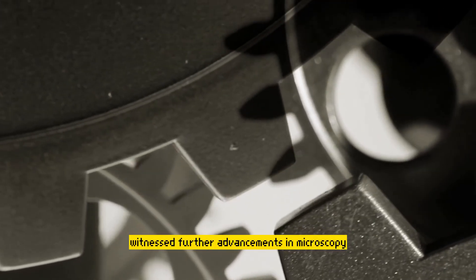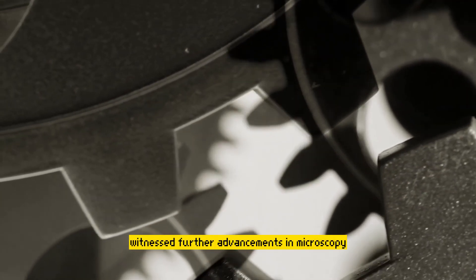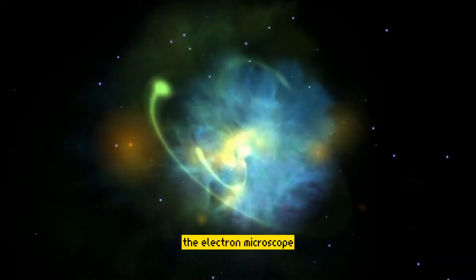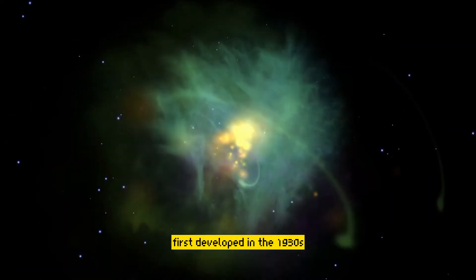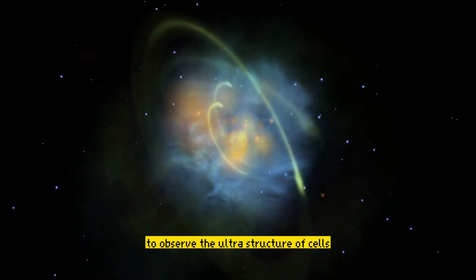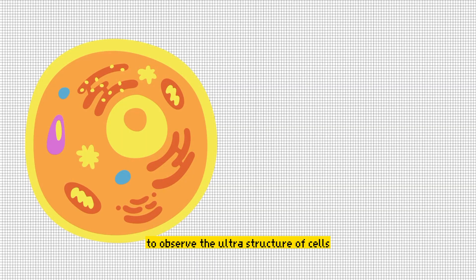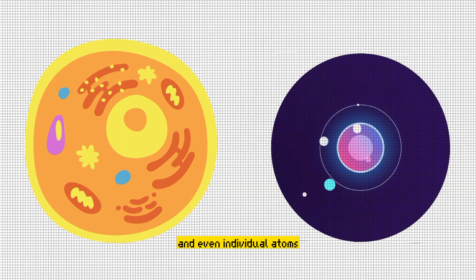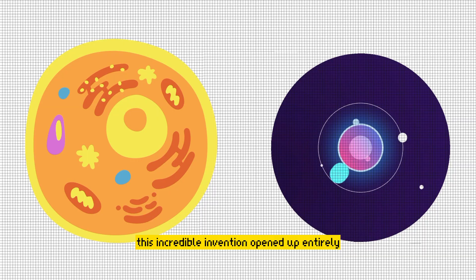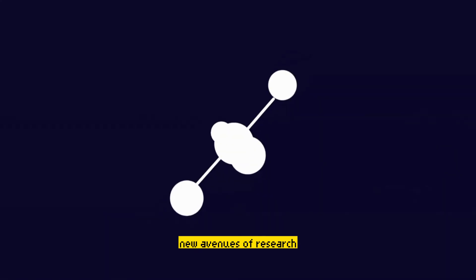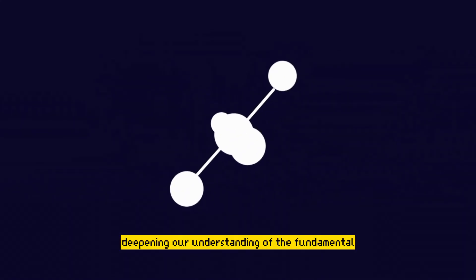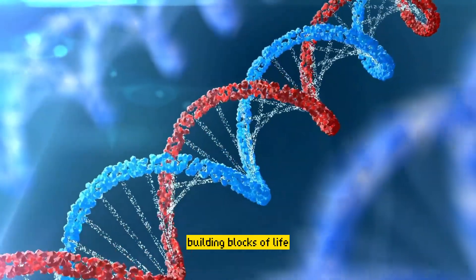The 20th century witnessed further advancements in microscopy. The electron microscope, first developed in the 1930s, revolutionized our ability to observe the ultra-structure of cells and even individual atoms. This incredible invention opened up entirely new avenues of research, deepening our understanding of the fundamental building blocks of life.